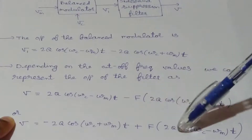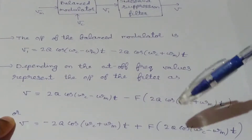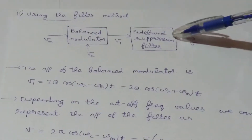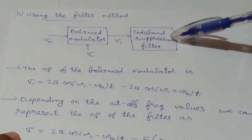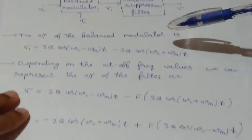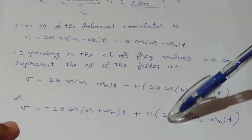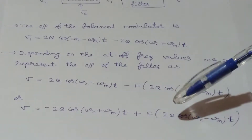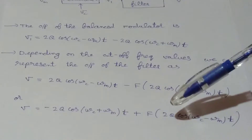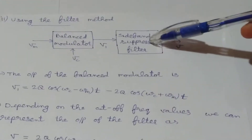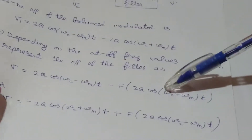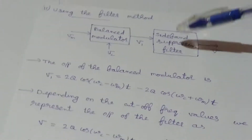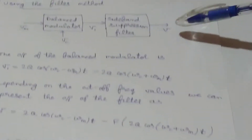So this is our required vestigial sideband signal. We will transmit either the lower or upper sideband variant depending upon the cutoff frequencies of this sideband suppression filter. The cutoff frequency details were already discussed in the previous class for VSB modulation technique, so you can go through that video class to get a clear idea. By using this arrangement we can obtain our required vestigial sideband signals at the output.